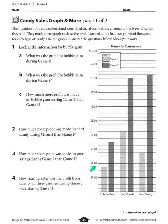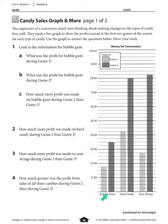The y-axis goes from one dollar, two dollars, three dollars, up to ten dollars. Number one says: look at the information for bubble gum. What was the profit for bubble gum during game one?